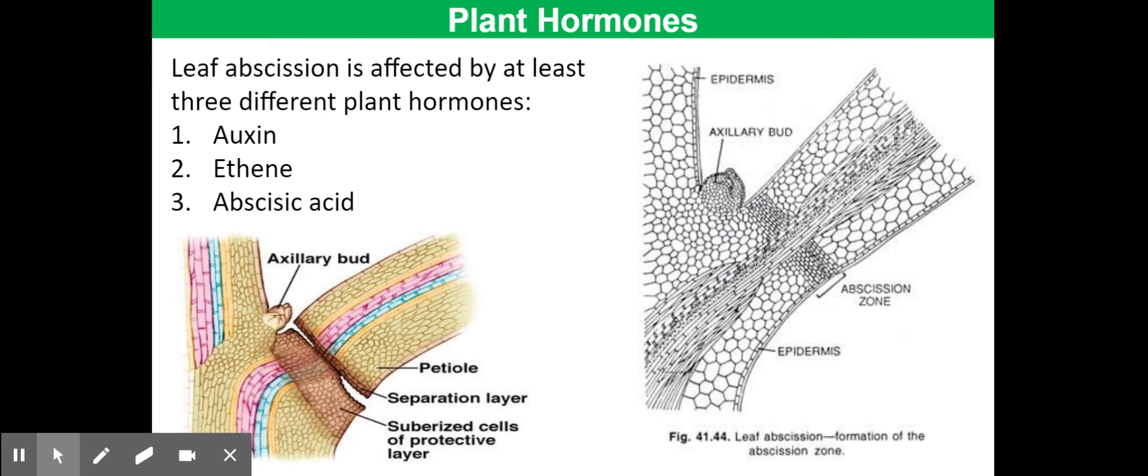But actually in others, it appears to prevent this process from occurring. So we now understand auxin and ethene to be the major plant hormones responsible for leaf abscission.